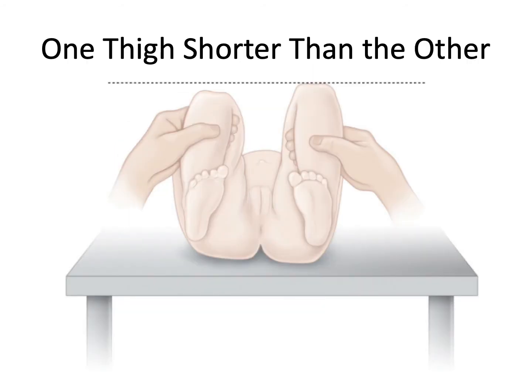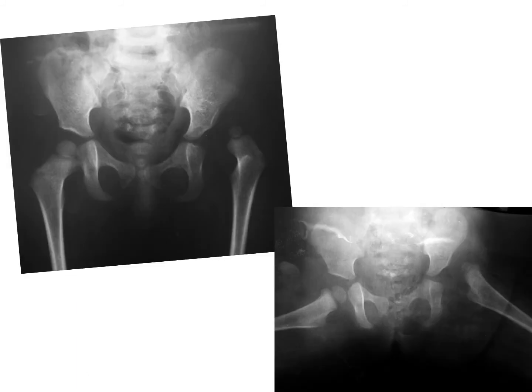This sign is seen only in unilateral DDH. In bilateral cases, both thighs will be equally shortened due to the dislocation. Radiographically, taking a good look at these x-ray views of the pelvis of a child, we can see that the left femoral head with a small ossific nucleus sits outside the bony acetabulum, while the right femoral head sits nicely in the acetabulum and has a more developed ossific nucleus.